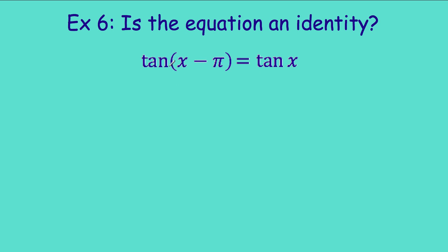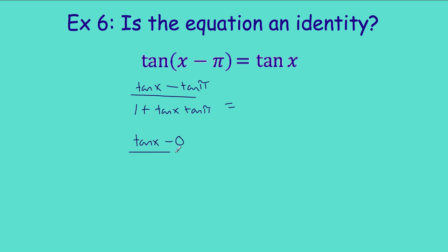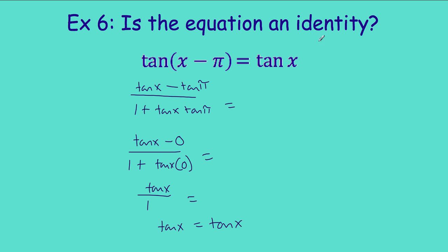Let's verify the identity that tangent(x − π) = tangent(x). Using the tangent difference formula: (tan x − tan π) divided by (1 plus tan x · tan π). Since tan π = 0, the numerator is tan x minus 0 = tan x, and the denominator is 1 plus tan x · 0 = 1. So tan x divided by 1 is tan x — confirmed. Best of luck on your mastery check. I'll see you on the flip side.